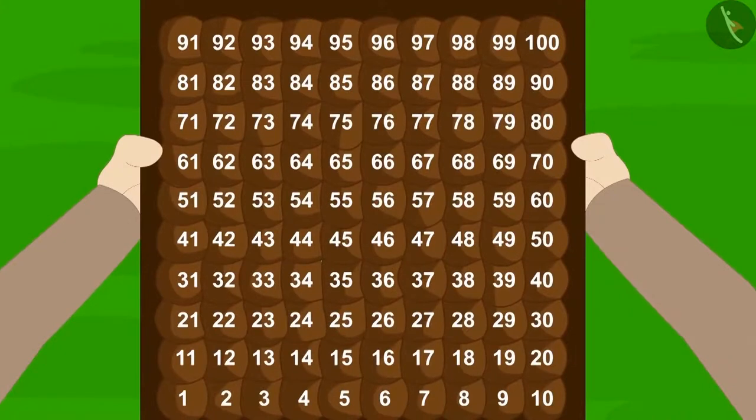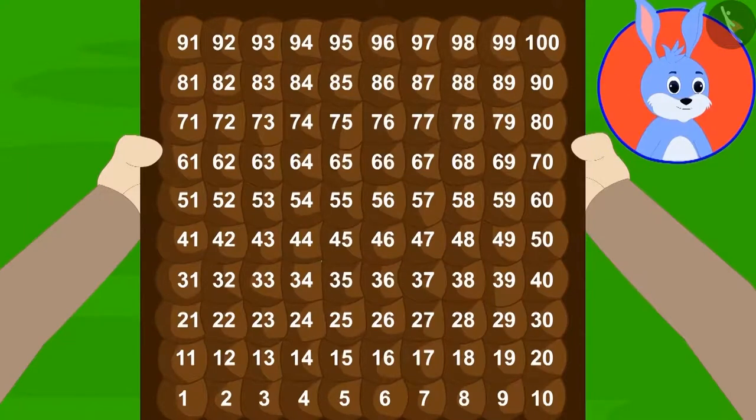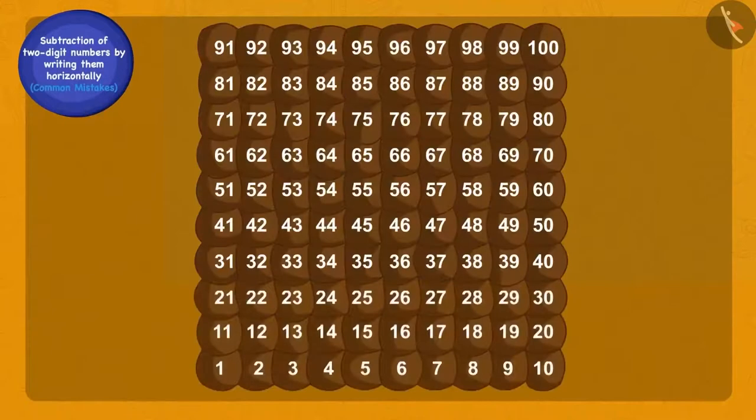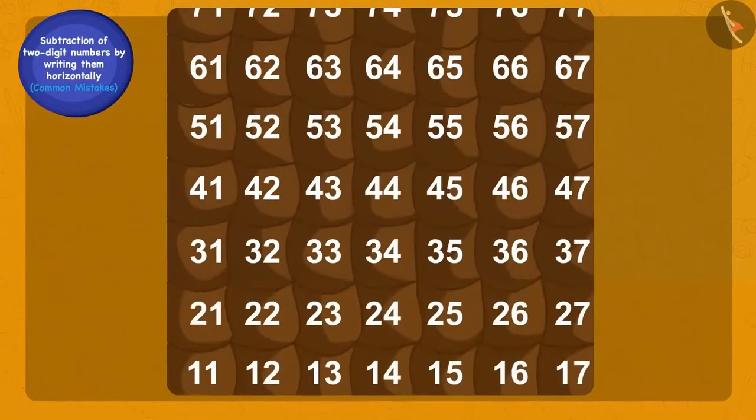Bholu has a grid full of numbers. Children, have you seen this grid before? Yes! This grid is exactly like Bunny's hundred-room house. In this puzzle, we have to find the number which, when subtracted from 67, will give 36.